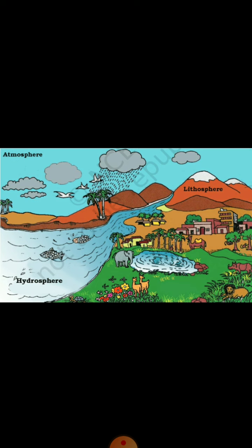The lithosphere provides us land for agriculture and for building houses and roads. It is an important source of mineral wealth. Hydrosphere. Water in all forms — solid, liquid and gas — present on earth is referred to as the hydrosphere.